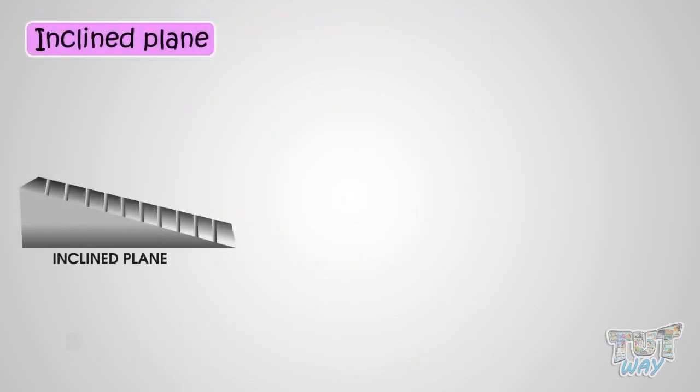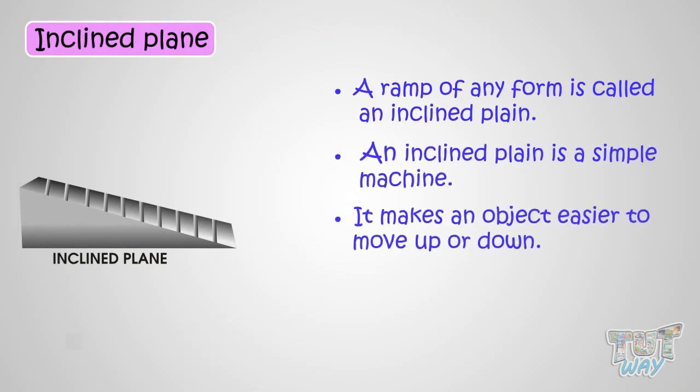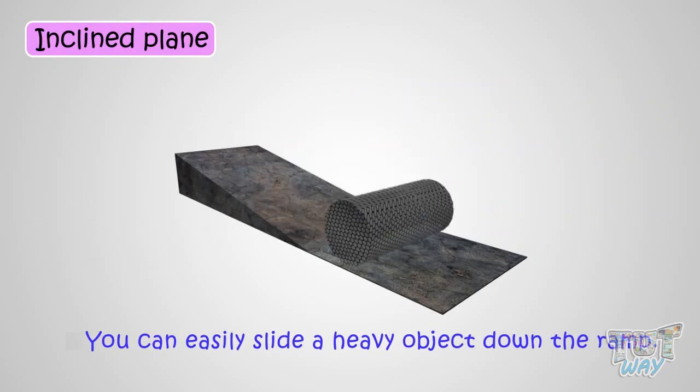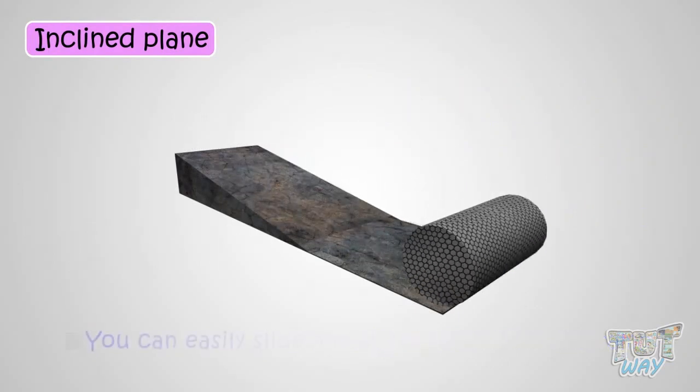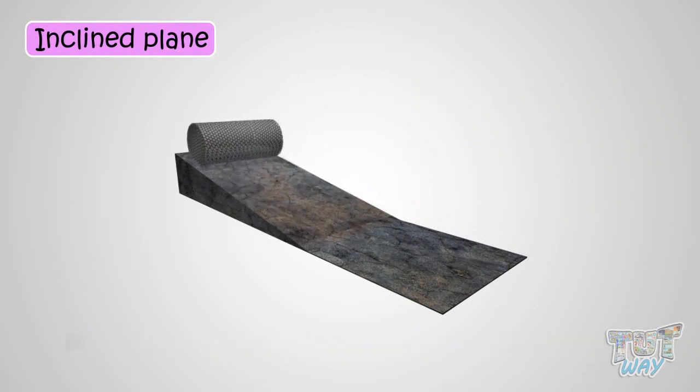Inclined plane. A ramp of any form is the simplest machine and it makes moving up or down any object easier. So you can slide down the ramp any heavy object or slide up the ramp any heavy object. So a ramp or an inclined plane makes your work easier.